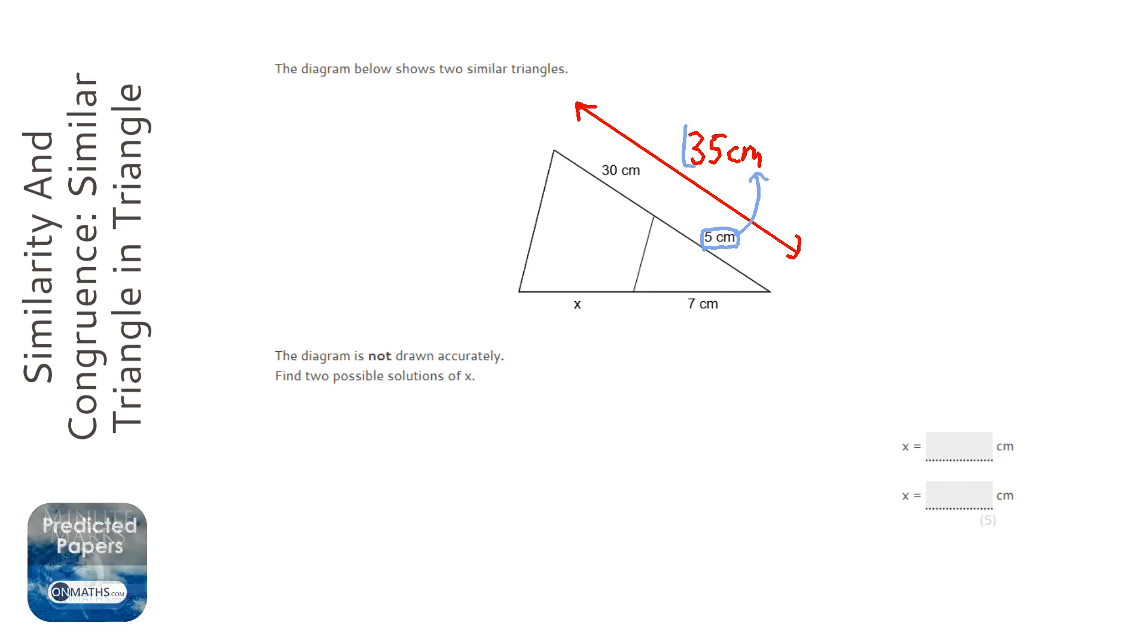To work out the scale factor, we do 35 divided by 5 which is 7. So scale factor is 7.